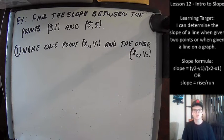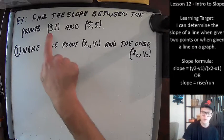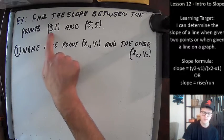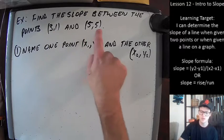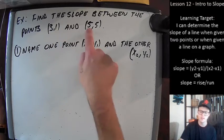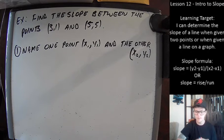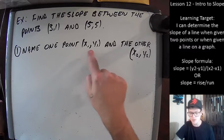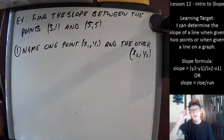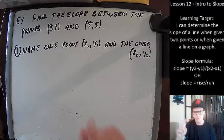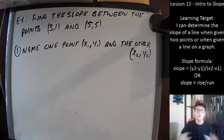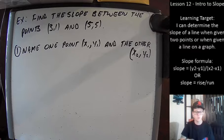It sounds weird but all we're doing is keeping our ducks in a row and keeping things organized. We know that when we have an ordered pair it's always x, y — input, output — always the same. So we're just going to name one of them x₁, y₁ to designate it as point number one, and the other as point number two. This is just a naming exercise — we're not doing any math with this yet.